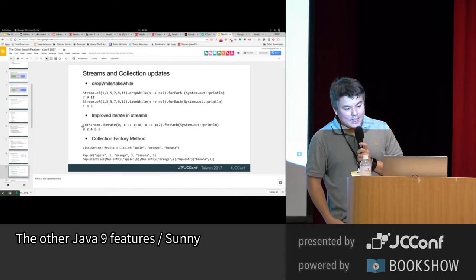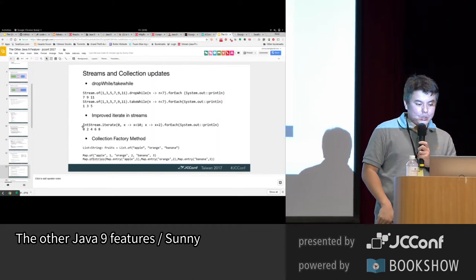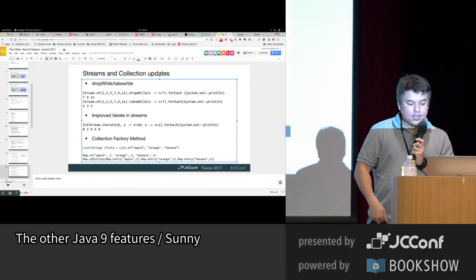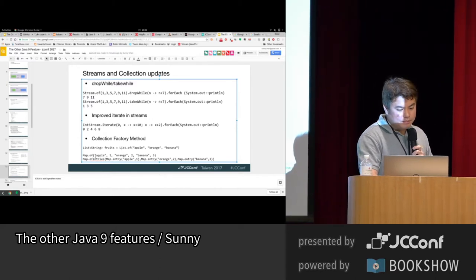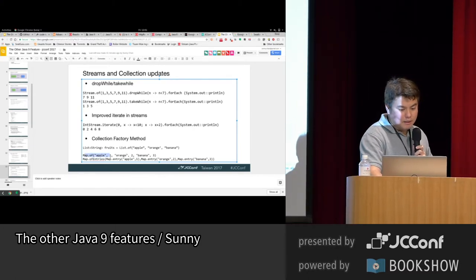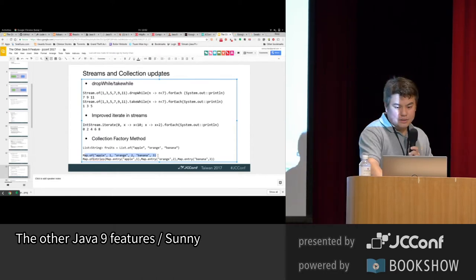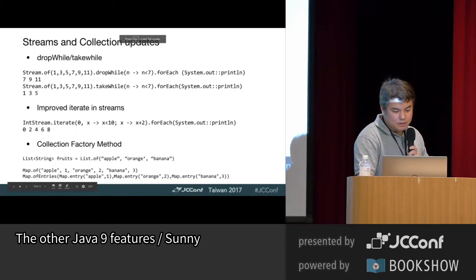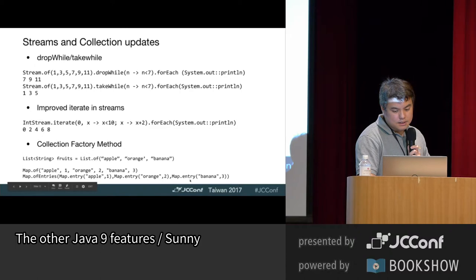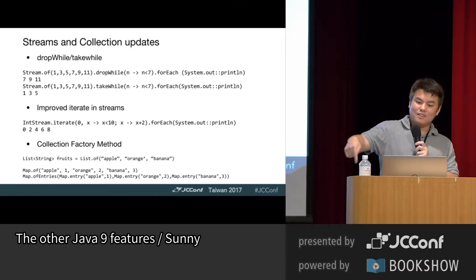Finally, they have implemented factory methods for fixed collections. If you already know all the elements of your collection, you can call List.of or Map.of. For Map they implemented two ways of Map.of: one where you provide key-value pairs inline — apple one, orange two, banana three — and another using the entry method where you create Map.Entry objects. Sometimes the entry approach is cleaner, but either way you can do it instead of calling map.put repeatedly.